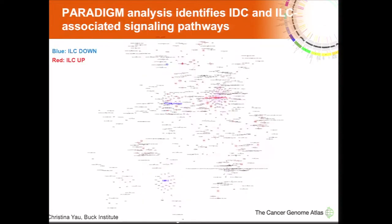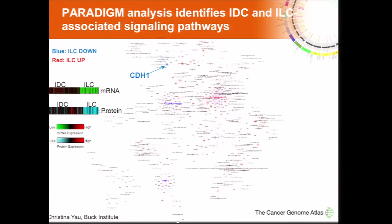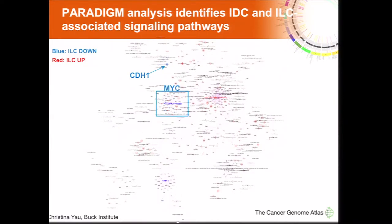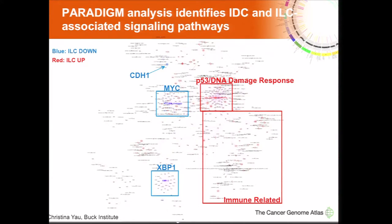Taking a step back and looking at this on a more global scale, we used PARADIGM analysis to look at patterns of associated signaling pathways. There are nearly 2,000 features dysregulated between the two subtypes. In lobular tumors, we see loss of CDH1 signaling, loss of MYC signaling relative to ductal, low XBP1 signaling consistent with FOXA1 mutations, increased P53 damage response consistent with increased P53 mutations in ductal tumors, and increased immune-related signaling consistent with both RNA expression data and methylation data.